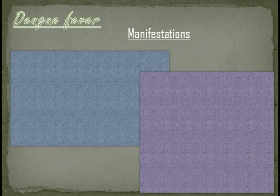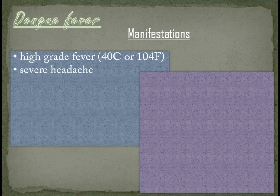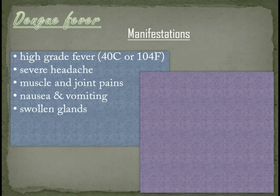Manifestations. High-grade fever accompanied by two of the following symptoms: severe headache, muscle and joint pains, nausea and vomiting, swollen glands, and skin rashes.